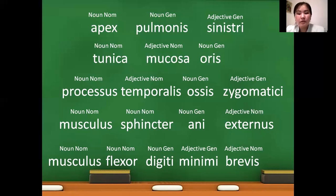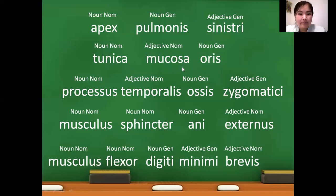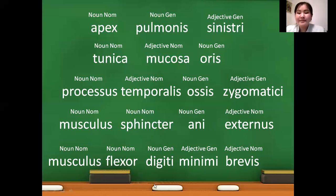So if we translate these terms: apex pulmonis sinistri means apex of the left lung; tunica mucosa oris means mucous membrane of the mouth; processus temporalis osis zygomatici means temporal process of the zygomatic bone; musculus sphincter ani externus means external sphincter muscle of the anus; and musculus flexor digiti minimi brevis means short flexor muscle of the smallest finger. Today we discussed the structure of anatomical terms. I hope my lesson was informative for you — thank you for your attention, goodbye.